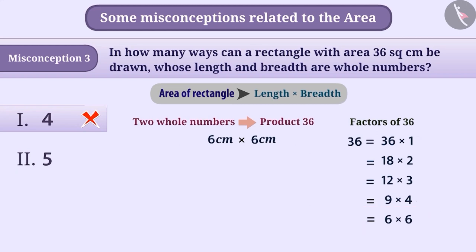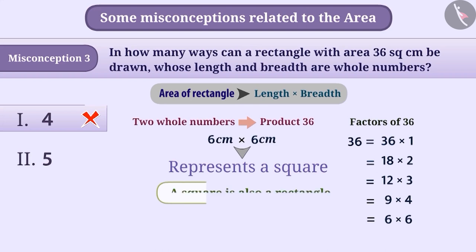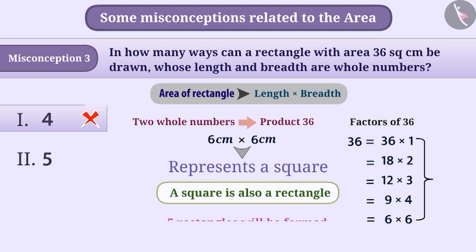Even though 6 cm × 6 cm represents a square, a square is also a rectangle. Therefore, a total of 5 rectangles will be formed here, which means option 2 is the correct answer.